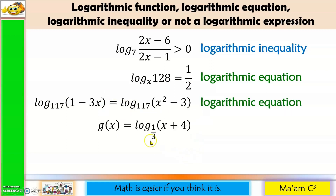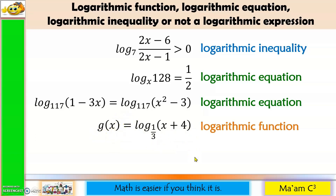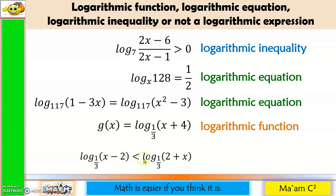Another one: one side is a logarithmic expression, there is g of x, and an equal sign — so this is a logarithmic function. Last one: both sides are logarithmic expressions and there is an inequality symbol — so this is a logarithmic inequality.